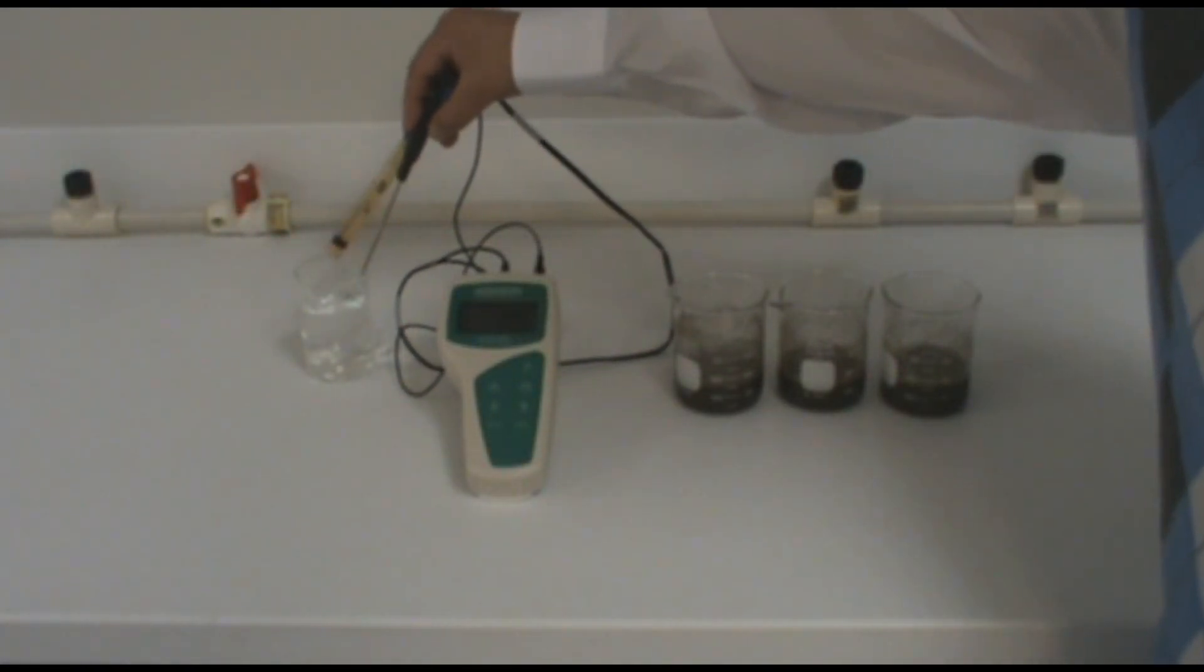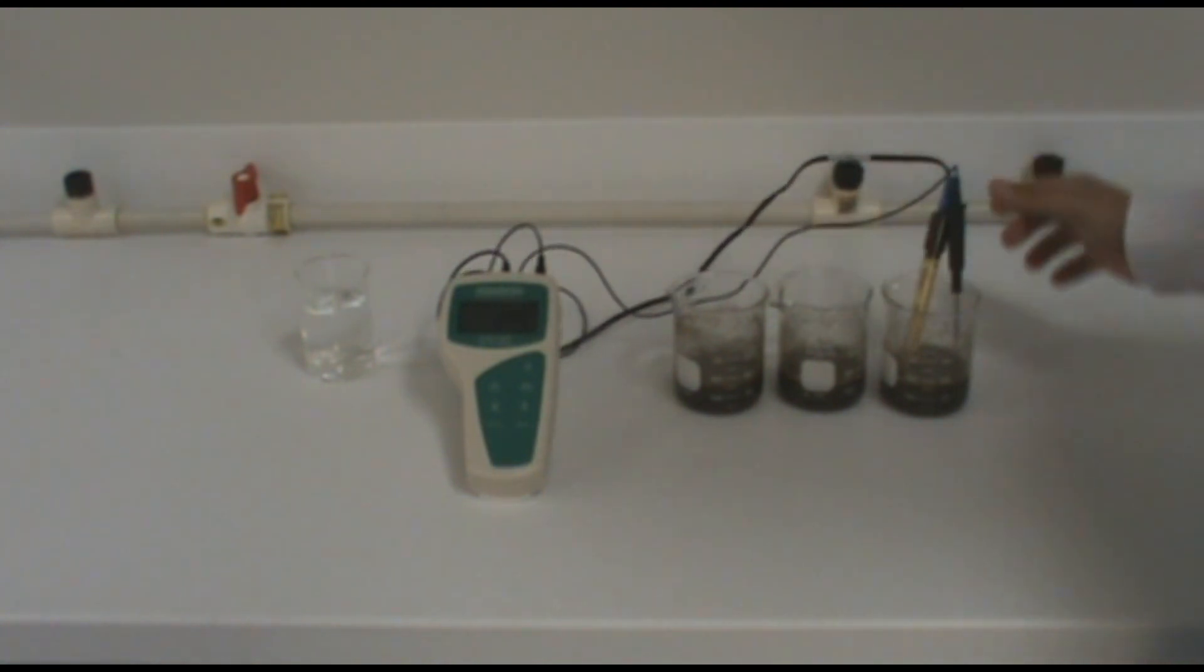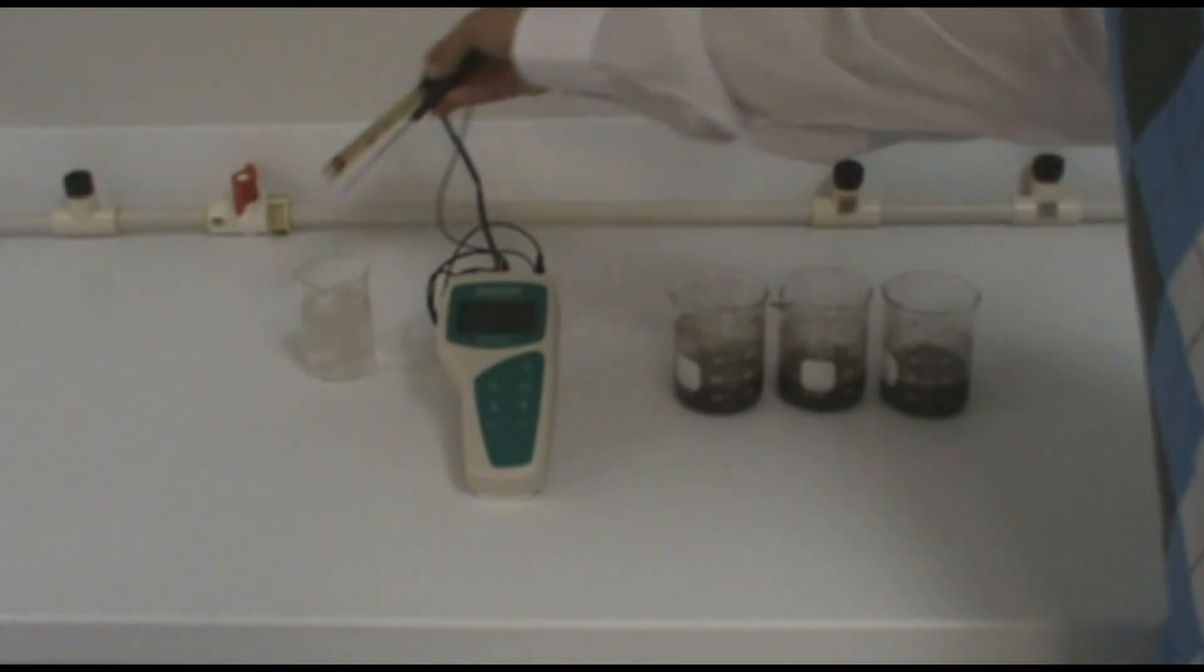Take the pH electrode and ATC probe and place them in the first soil sample. Allow the reading to stabilize and record this reading. You will then follow this same procedure for your next two samples.